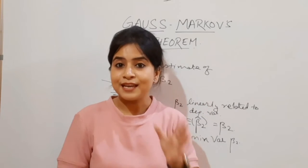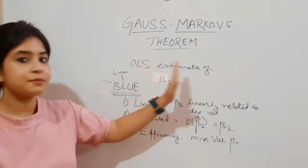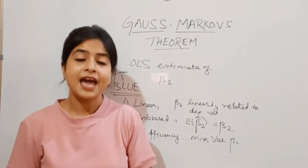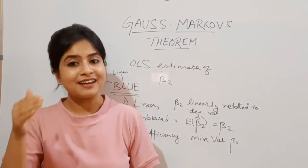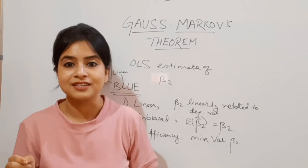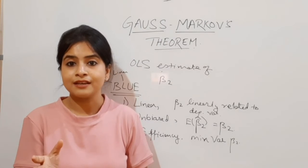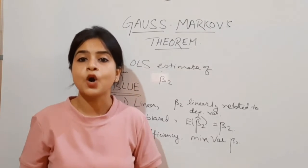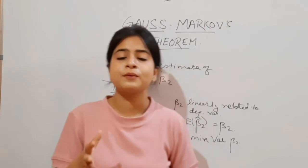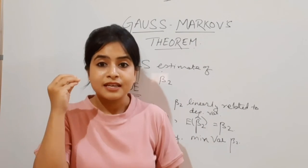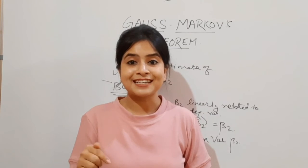In a gist, I can put Gauss-Markov's theorem as follows: given the Classical Linear Regression Model conditions, along with the unbiased property being satisfied and the estimator being efficient — in a nutshell, if any estimator satisfies the BLUE property, we can explain and condense the whole thing with the help of Gauss-Markov's theorem. This is how you can put Gauss-Markov's theorem in very simple and easy terms.